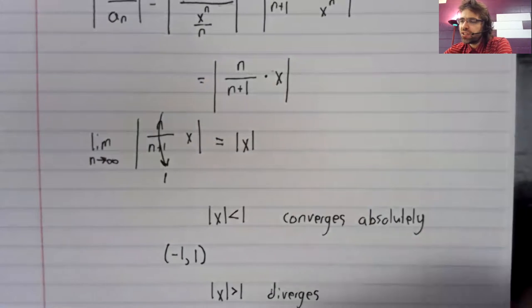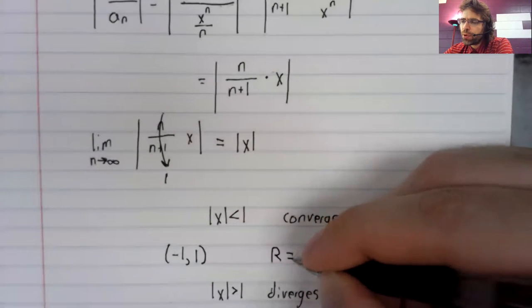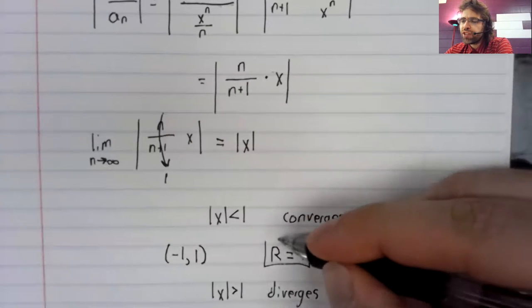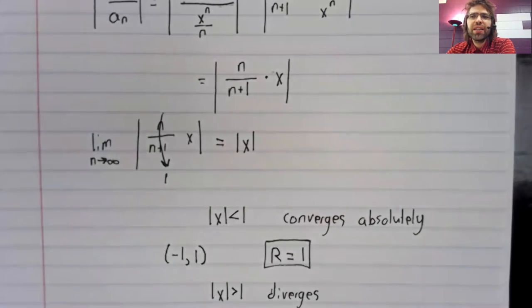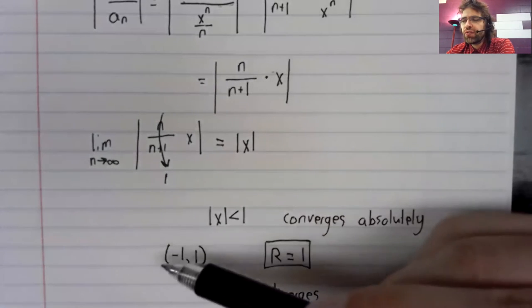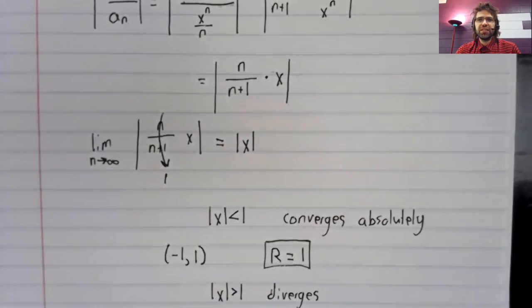There's a reason that convergence of power series is usually expressed simply by giving the radius of convergence and not getting bogged down in the minutiae of what happens at two particular points.